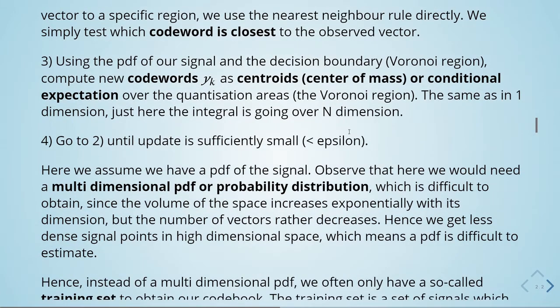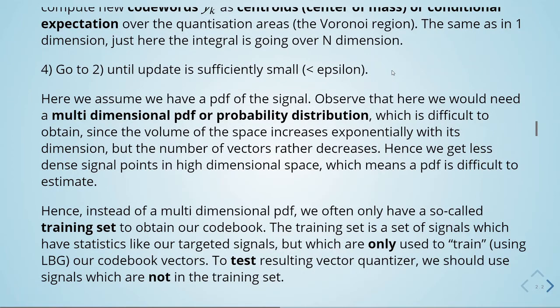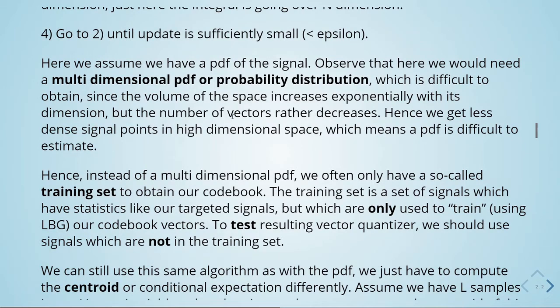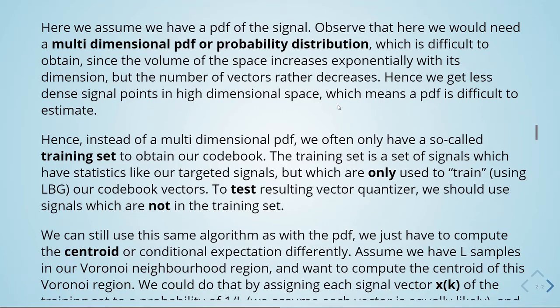Here we assume we have a PDF of the signal. But observe that we would need a multi-dimensional PDF, or probability distribution, which is difficult to obtain — since the volume of the space increases exponentially with its dimension, while the number of vectors rather decreases. Hence we get fewer signal points in high-dimensional space, which means a PDF is very difficult to estimate. So we need a different strategy. Instead of a multi-dimensional PDF, we often only have a so-called training set to obtain our codebook. The training set is a set of signals with statistics like our target signals, but which are only used to train our codebook vectors.